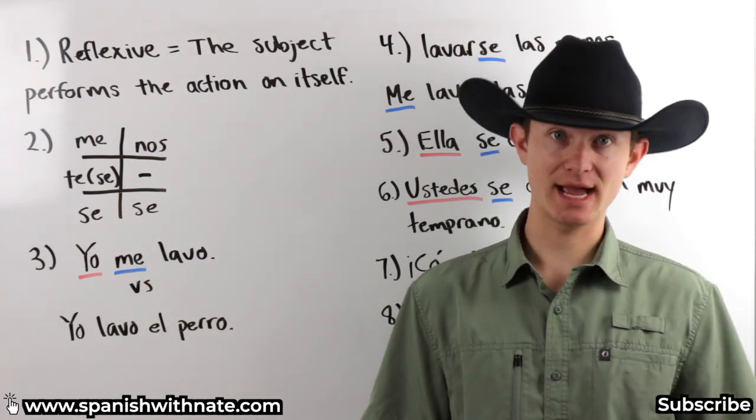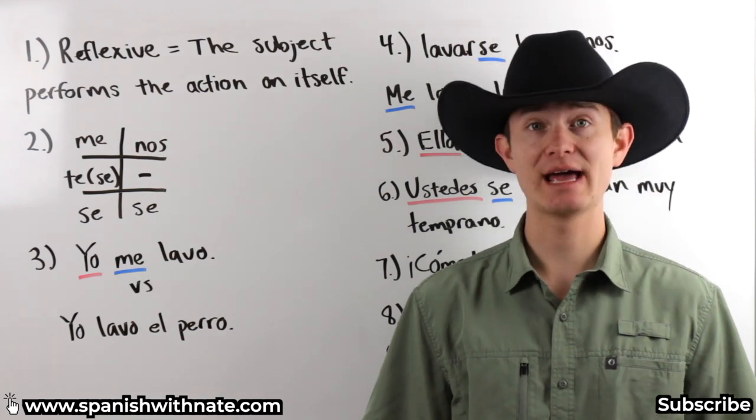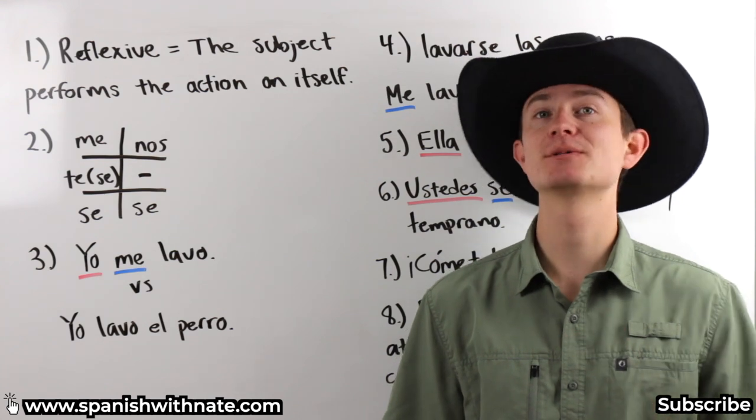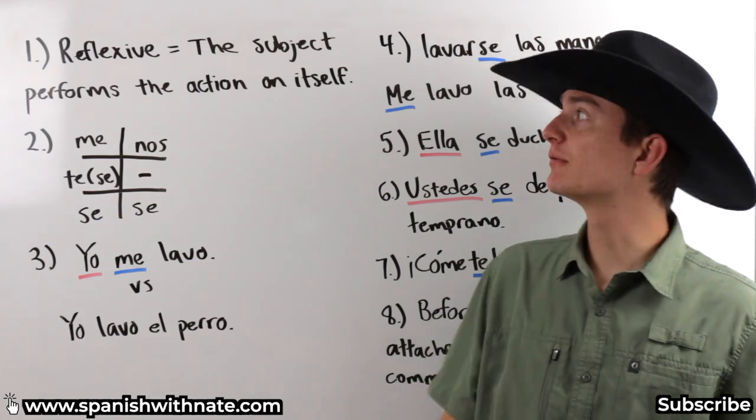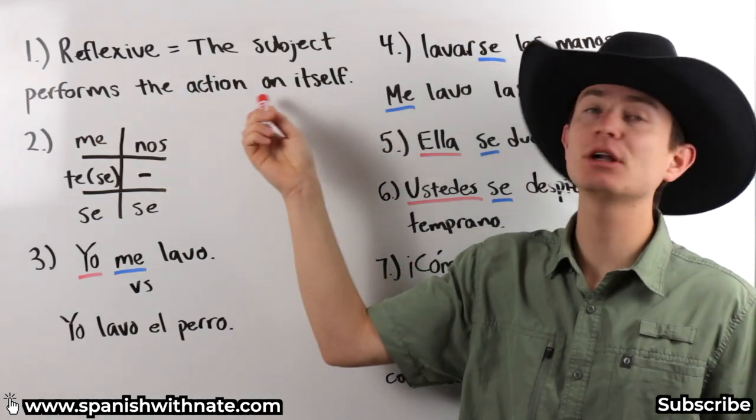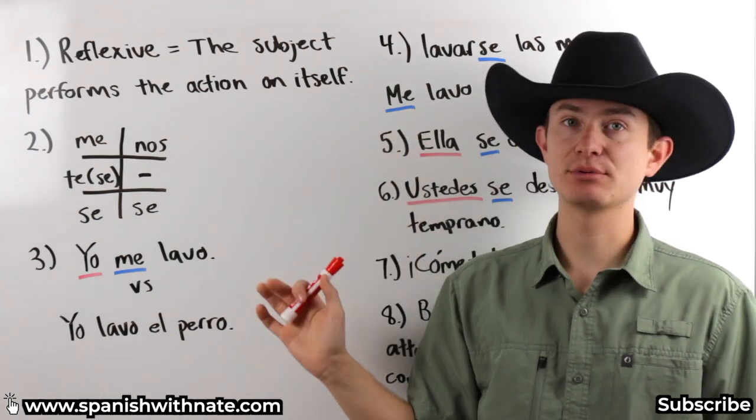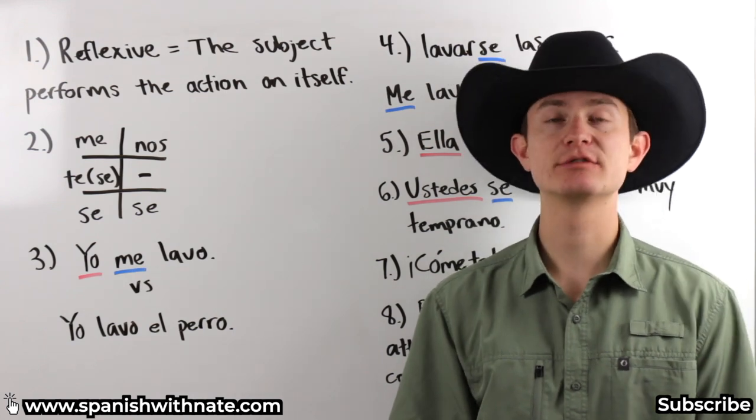Now, this se is not to be confused with the impersonal and the passive se, which I talk about in another video lesson. So today we're going to be talking about reflexive pronouns. Now, what are reflexive verbs? Reflexive verbs are when a subject performs an action on itself. So we'll take a look at some examples here and kind of dive deeper into that. But let's first take a look at our reflexive pronouns.